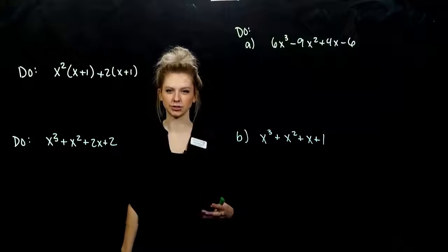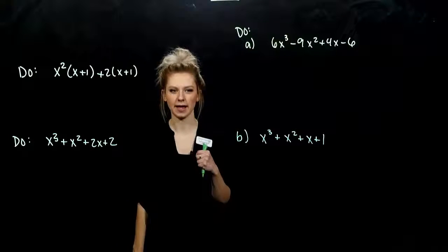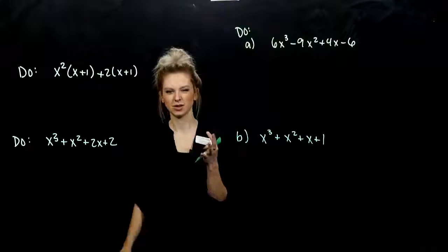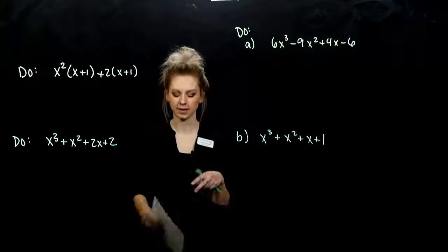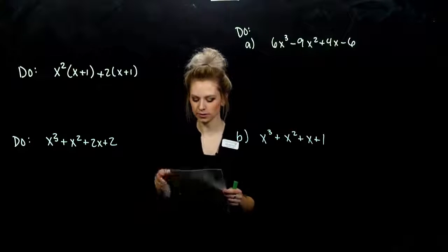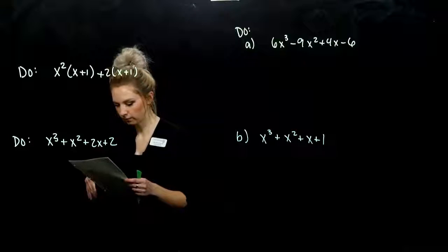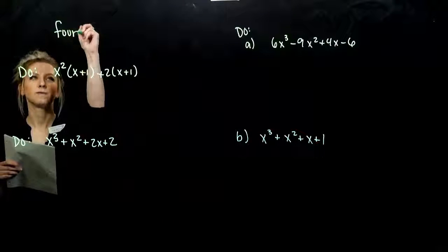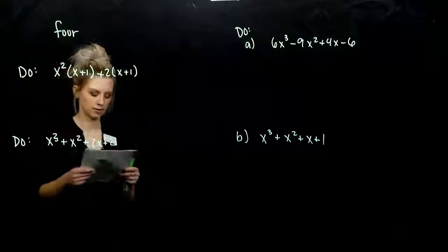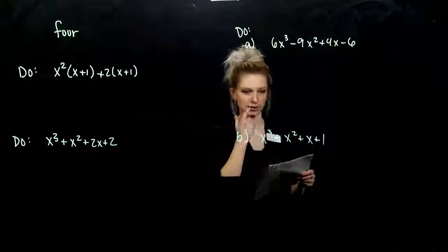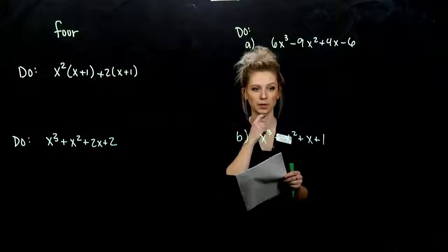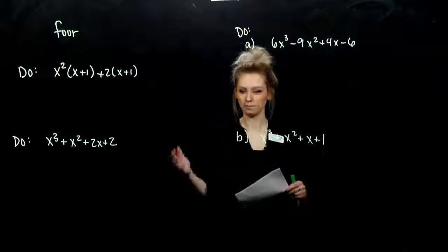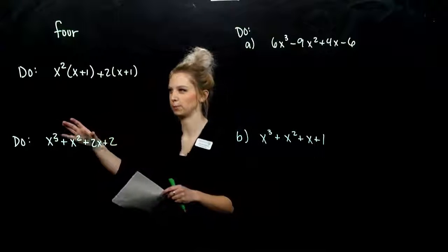The next chunk of factoring we're going to look at is polynomials with four terms. They're kind of our special cases, and certain polynomials with four terms can be factored using this method called factoring by grouping. We'll build to that, starting with this first example.